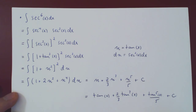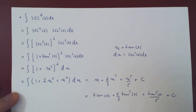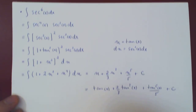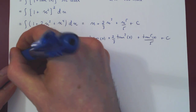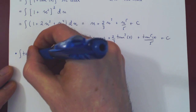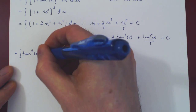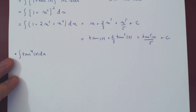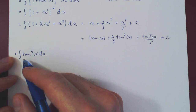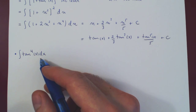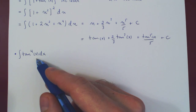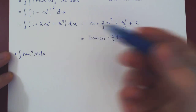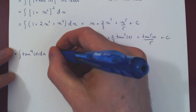Let's do one more example. Now, instead of a secant, we'll have a tangent, and we'll take the fourth power. The sixth power would work the same, except it would be just a little longer. Again, we have two options: we want to factor a secant squared — but there's no secant squared — or we can factor a secant tangent — but there's no secant. So what do we do? Well, let's try and factor a tangent squared.